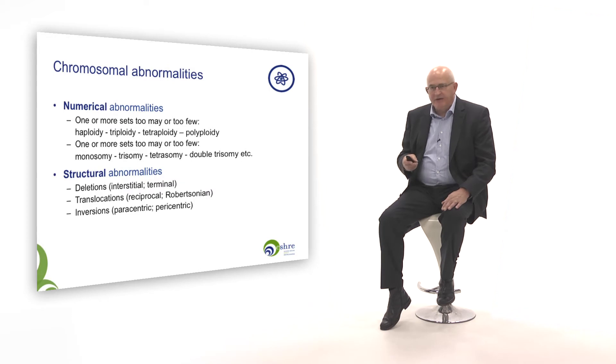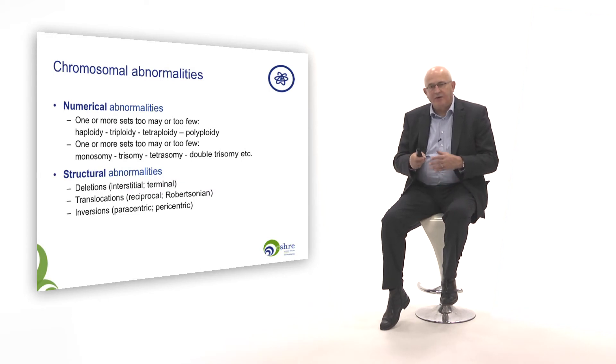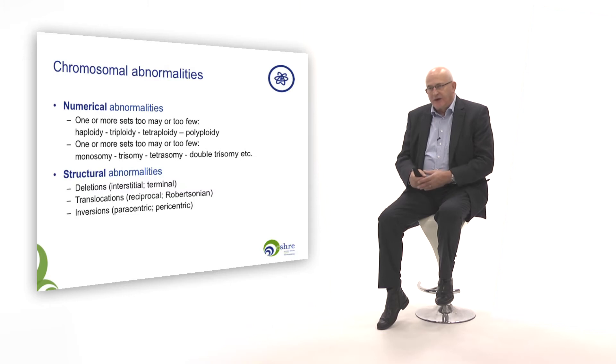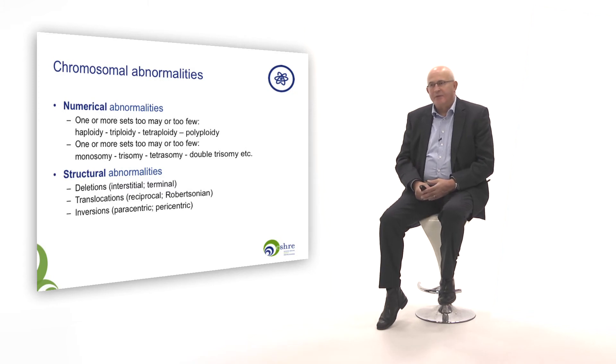Looking at chromosome abnormalities, we can have abnormalities where the number is not right: you can have one chromosome extra, one chromosome too few, or many chromosomes that are extra or too few. There are many different types of so-called numerical abnormalities. In this introductory course, it goes too far to go into detail about all of these, but you can be sure that there are many different abnormalities.